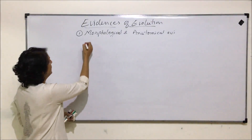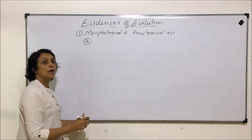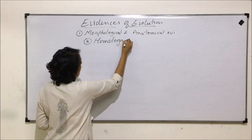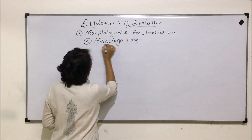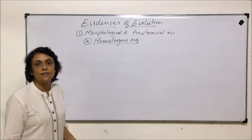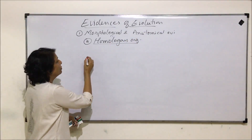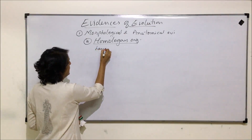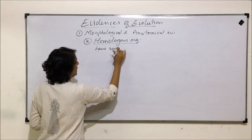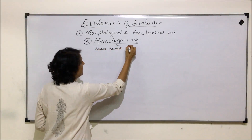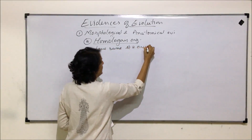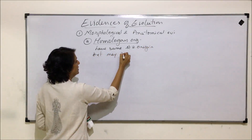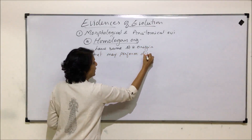Under morphological and anatomical evidences, we will first discuss homologous organs. Homologous organs are those organs which have the same origin or same structure and origin, but may perform different functions.